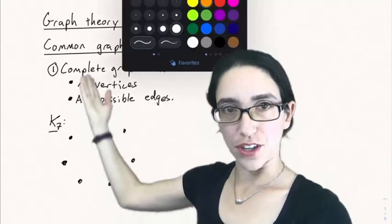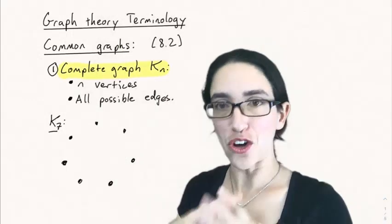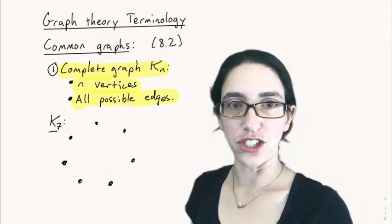So the complete graph, Kn, is the graph on n vertices that has all possible edges between those vertices. So every pair of vertices makes an edge.